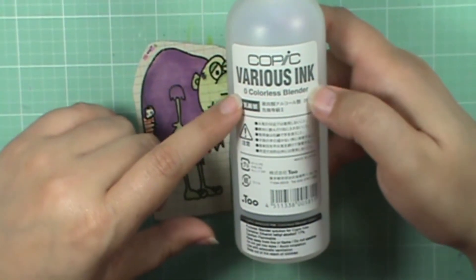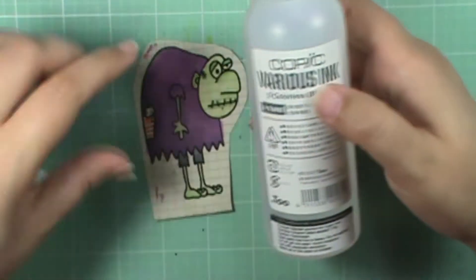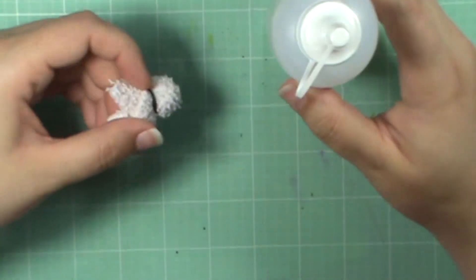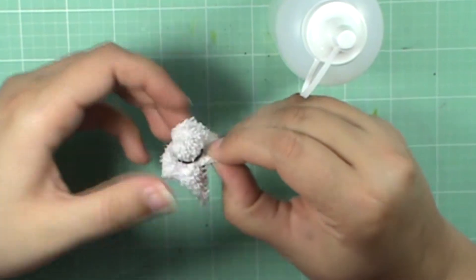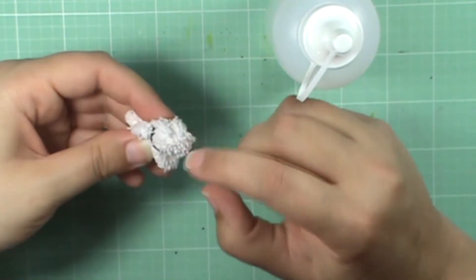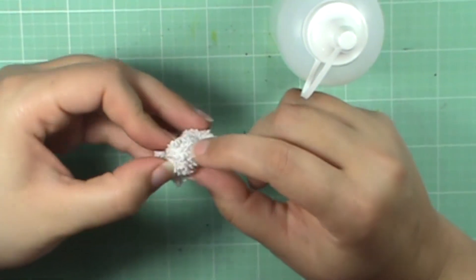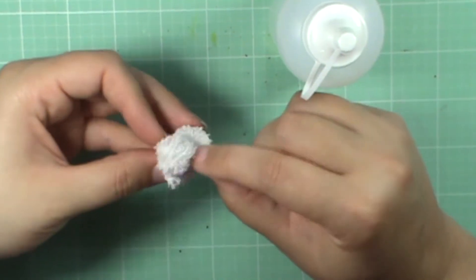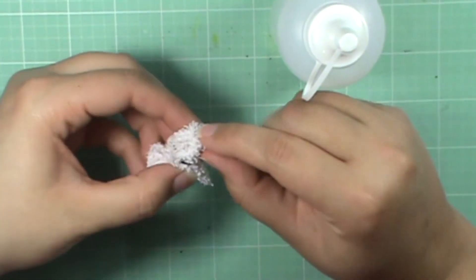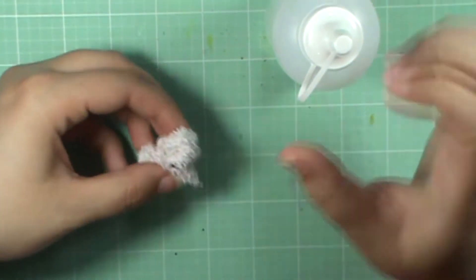Okay, so then I'm going to take this. This is the colorless blender. And I have cut off a little piece of a washcloth and tied it. So it gives me almost a sponge dauber effect. It's just super small. I wanted it small so I had more control over it.